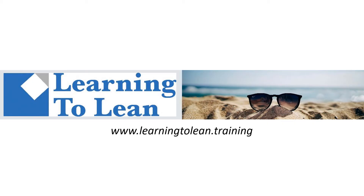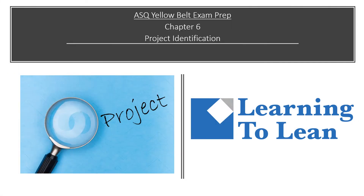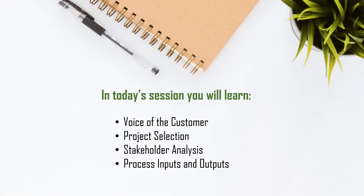Hi, and welcome to another fantastic training session with Learning to Lean. Let's get started. Today we will be covering Chapter 6 from the Certified Six Sigma Yellow Belt Handbook, Project Identification. In today's session, you will learn voice of the customer, project selection, stakeholder analysis, and process inputs and outputs. Let's get started.